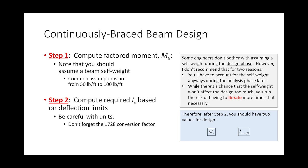Some engineers in steel building design don't bother assuming a self-weight during the design phase. I don't recommend that for two reasons. First, you have to account for self-weight during the analysis phase anyway, so you might as well do it throughout — it reduces mistakes. Second, there's a chance the self-weight will affect your design, and you risk having to iterate more if you don't account for it during the initial selection.